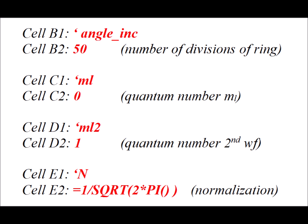Cell C1, we type apostrophe m l, that's the quantum number m sub l, and the actual value is going to be in cell C2, where we start out 0. For later purposes, in cell D1, we're going to put apostrophe m sub l 2, and in cell D2, we have that second example of a quantum number, and we're going to put the number 1 there.